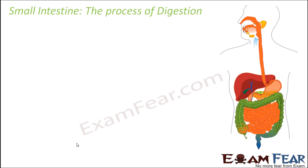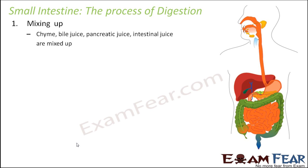Now we will look at the exact process of digestion. The first step is mixing up — the chyme, bile juice, pancreatic juice, and intestinal juice all need to be mixed up properly. The chyme enters the small intestine through the pyloric sphincter from the stomach. The bile juice and pancreatic juice come from the hepatopancreatic duct into the duodenum, while the intestinal juice is secreted by cells of the intestine like the goblet cells and brush border cells.